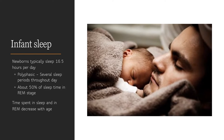Two important terms here: polyphasic means having several sleep periods throughout the day, which describes newborn sleep. Newborns spend about 50% of their sleep time in REM — rapid eye movement sleep, named because the eyes move quickly in different directions during this phase due to brain activity. This is how dreams happen, and dreams are most vivid in REM. Parents wondering if their baby is dreaming — the answer is yes, and in fact babies dream far more in the first few months of life than at any other time. Time spent in REM decreases with age.